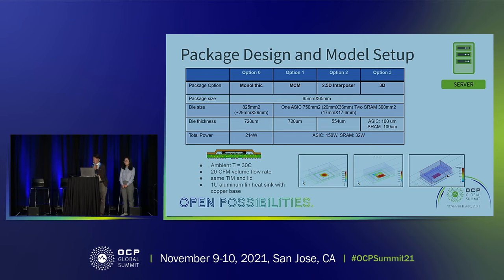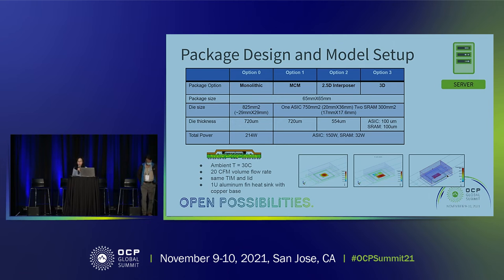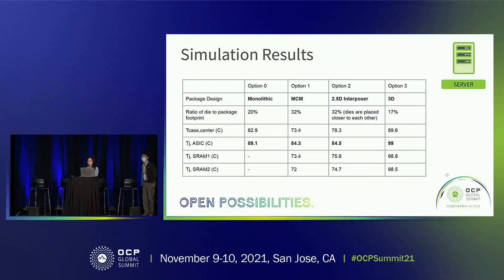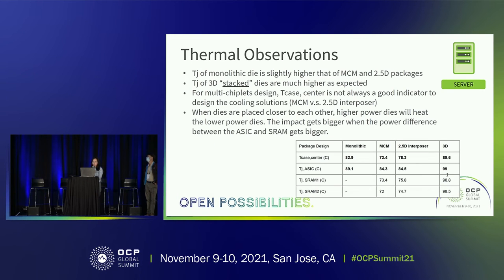Yin will now show you the detailed simulation data and results. This is Yin, I'm from Meta, and I'm a thermal engineer. I will cover the simulation results and walk you through some thermal considerations. This table summarizes the thermal performance and simulation results among the four package options. The first observation is that the junction temperature of the monolithic die is slightly higher than that of the MCM and 2.5D packages, because the monolithic die is smaller — the heat is more concentrated into a small area and not easy to dissipate.